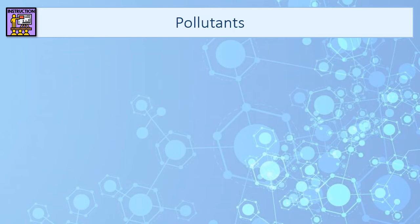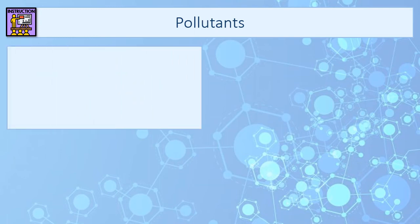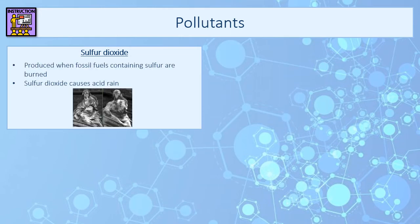The final topic we're going to talk about today is pollutants in the atmosphere — how burning fuels leads to increased pollution. We've already talked a little about carbon dioxide as a product of combustion. There are four other pollutants you need to know: how they're formed and their effects. The first is sulfur dioxide. A lot of fossil fuels contain sulfur impurities, and when you burn those fuels the sulfur combines with oxygen to form sulfur dioxide.